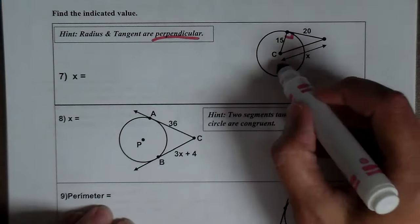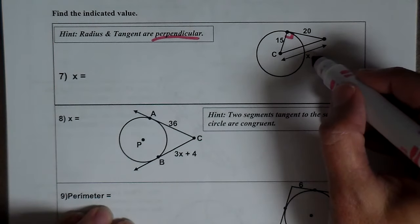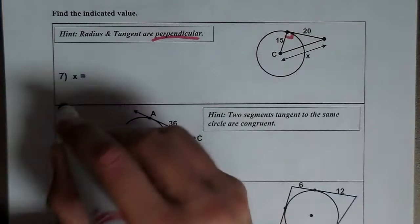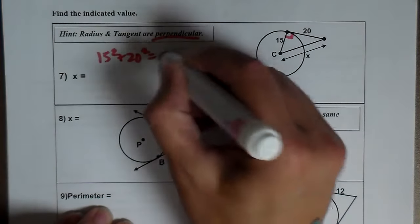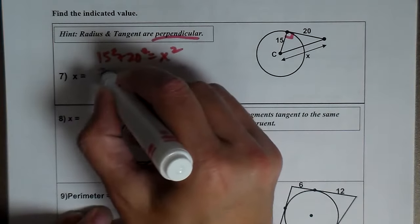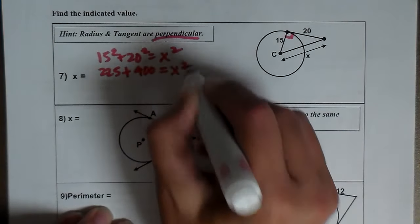If I've got a right triangle and I want to find the hypotenuse, I just use Pythagorean Theorem. I'm looking for the hypotenuse, I have the two legs, so I'm just going to add. So 15 squared plus 20 squared equals x squared. So I've got 225 plus 400 equals x squared,